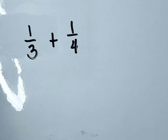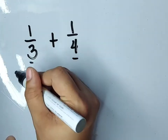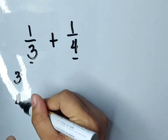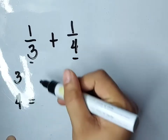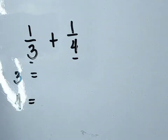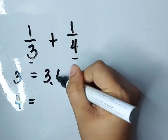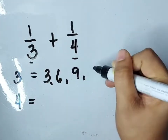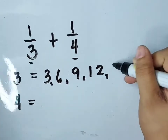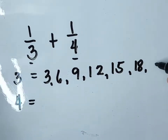I will teach you how to find the LCM using the listing method. Our denominators are 3 and 4. Let's write 3 and 4. In order to find the LCM, let's do skip counting by 3: 3, 6, 9, 12, 15, 18, 21.